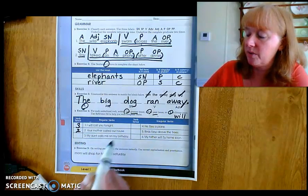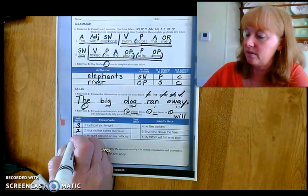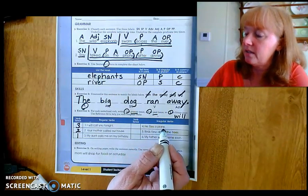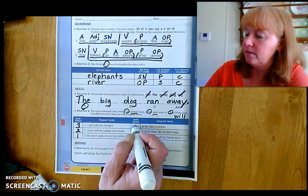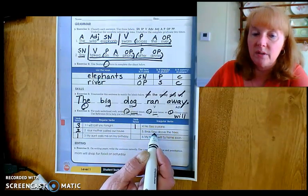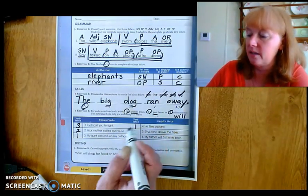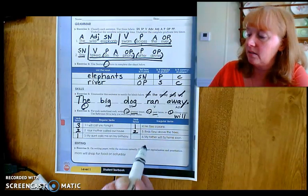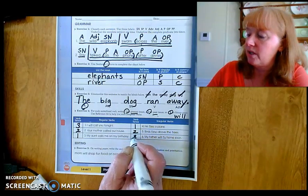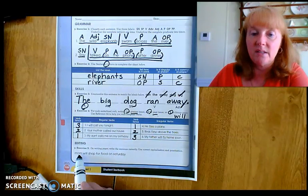My aunt calls me on my birthday. Calls. So it's present. He flies a plane. He is doing it right now. That is present. Birds flew. This already happened. They flew above the trees. Past. My father will fly home soon. Future tense.